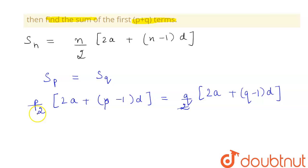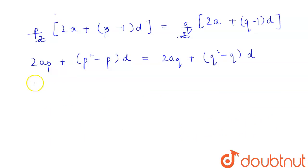2 and 2 will get cancelled. If we multiply, this will become 2AP plus P square minus P into D is equal to 2AQ plus Q square minus Q into D. Now, if we bring all the terms on one side, this will become 2AP minus 2AQ plus P square minus P into D minus Q square minus Q into D is equal to 0.